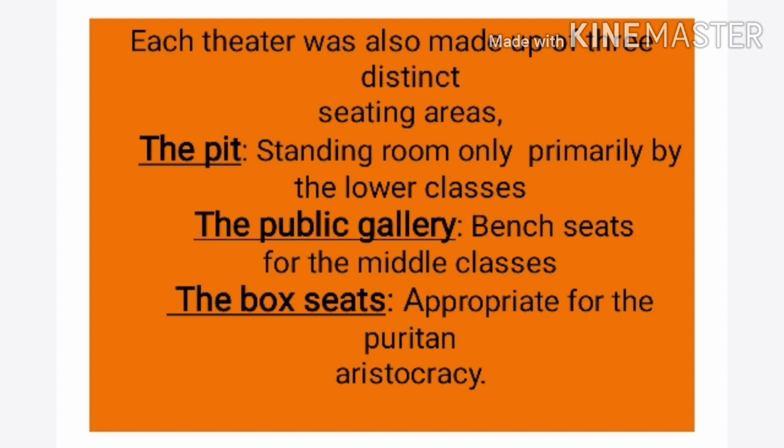Each theatre was also made up of three distinct seating areas, categorized according to social class. Number one was the pit — standing room only, primarily for the lower classes. Number two was the public gallery — bench seats for the middle classes. Number three was the box seats, specially designed and appropriate for the Puritan aristocracy. So the seating arrangement was organized according to lower class, middle class, and upper aristocratic class, respectively.